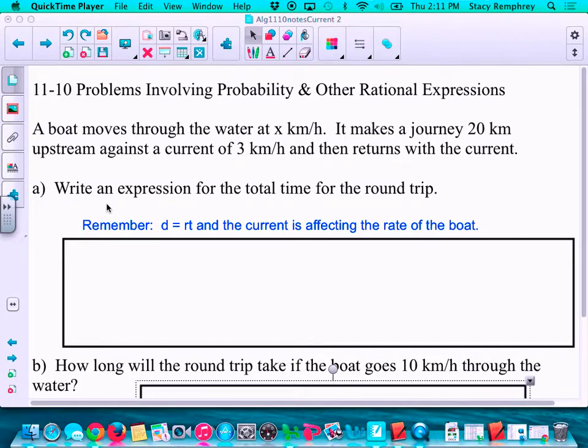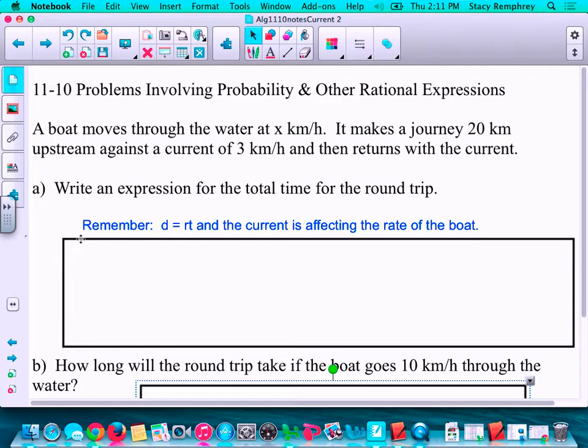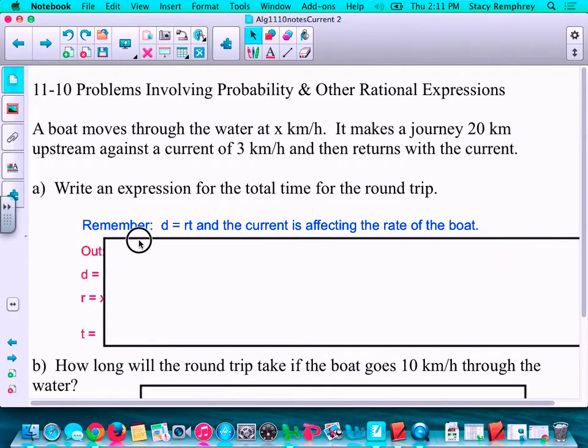So the first thing is to write an expression for the total time for the round trip. I wrote here, remember D equals RT and the current is affecting the rate of the boat. So remember that it's not just one rate, it's actually two rates.